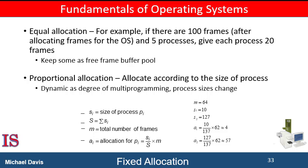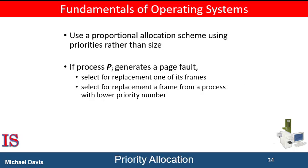An alternative is to recognize that various processes will need differing amounts of memory. Consider a system with a 1K frame size. If a small process of 10K and an interactive database of 127K are the only two processes running in the system with 62 free frames, it doesn't make much sense to give each process 31 frames. The small process does not need more than 10 frames, so the other 21 are wasted. To solve this problem, we can use proportional allocation, in which we allocate available memory to each process according to its size, so both processes share the available frames according to their needs rather than equally.